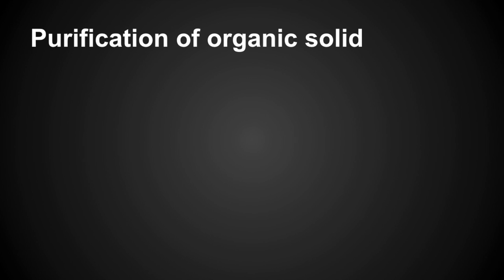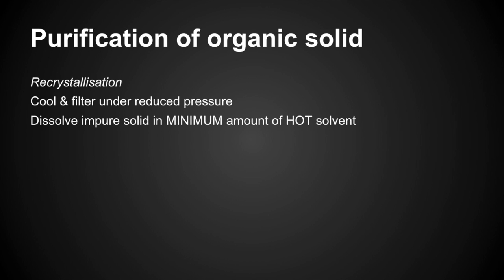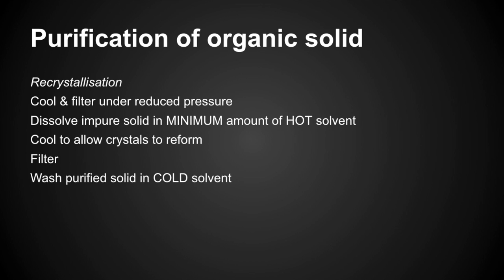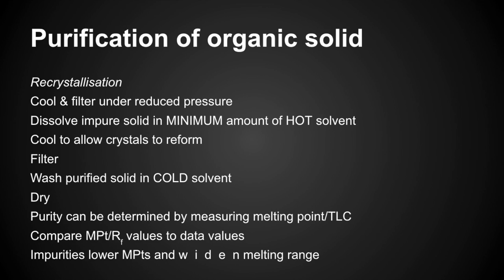Purification of an organic solid by recrystallisation: dissolve the impure solid in a minimum amount of hot solvent. Cool it down and allow crystals to re-form. Filter under reduced pressure using Büchner apparatus. Wash the purified solid in cold solvent (hot would dissolve it). Dry it, then check purity by determining the melting point or by TLC (thin layer chromatography) — compare to data values. Remember: impurities lower the melting point and widen the melting range; pure substances have sharp, defined melting points.